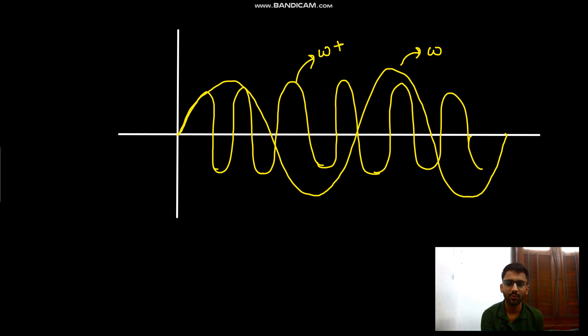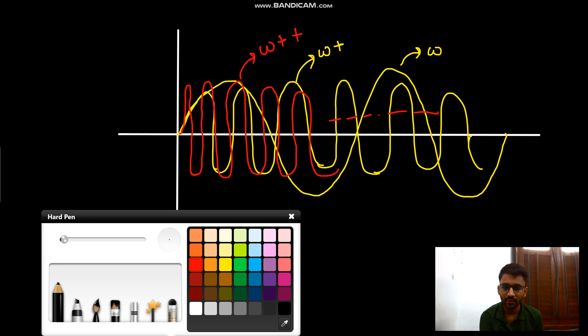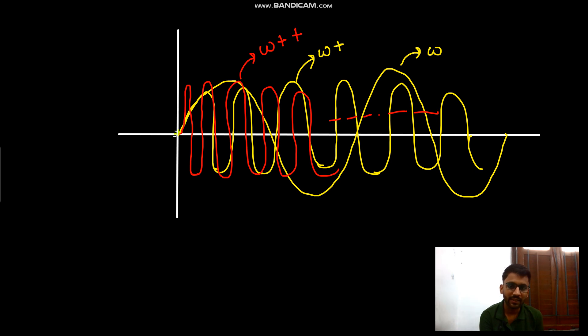And so on. So now your omega has increased more. Now what if you simply make it like this - a direct jump? Here there was a small jump, here there was a higher jump, and here was a higher jump. Now you are making a direct jump to some value. So what will be the frequency? The frequency will be infinity. Do you get it?